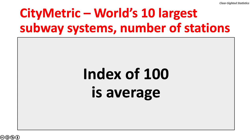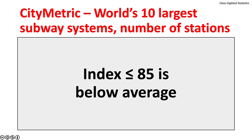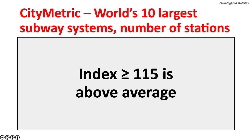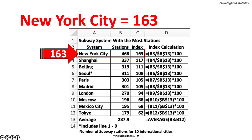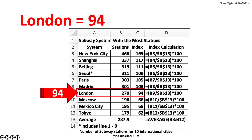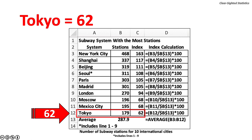For our example, we will use city metric data on the number of stations for the world's 10 largest subway systems. An index of 100 is average; an index of 80 or below is below average; an index of 115 or above is above average. The average number of subway stations is 287.9. New York City, with 468 stations, has a large index of 163, which is 63% above the base. London, with 270 stations, has an average index of 94, which is 6% below the base. Tokyo, with 179 stations, has a small index of 62, which is 38% below the base.